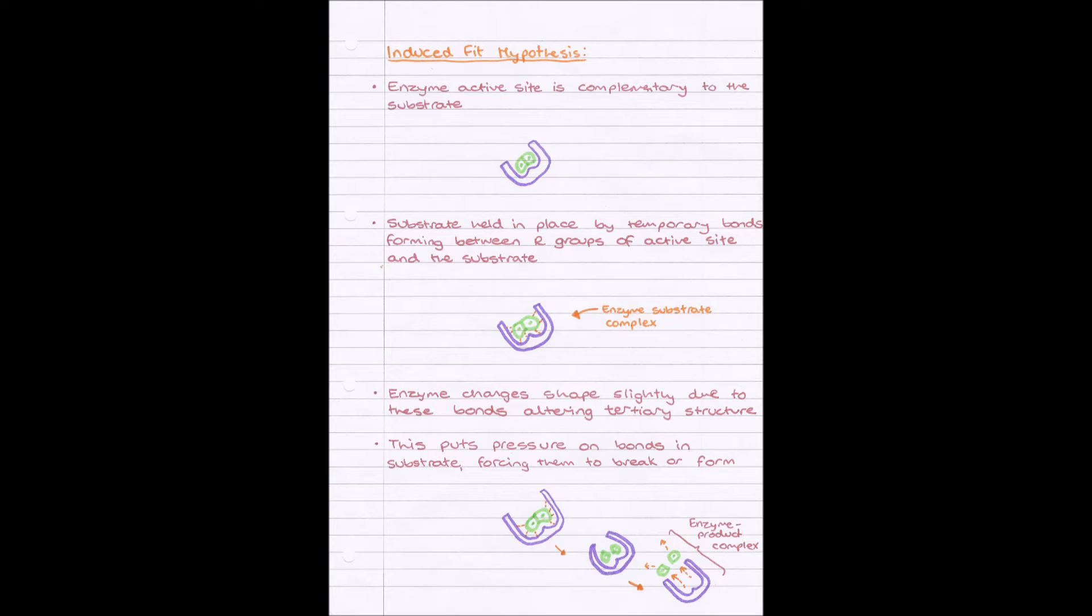By these bonds forming, these temporary ionic or hydrogen bonds normally forming between the substrate and the R groups on the active site, the enzyme's tertiary structure will be altered. Remember, at the end of the day, an enzyme is just a protein, a globular protein.